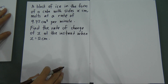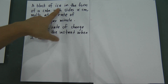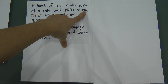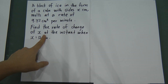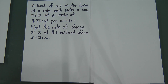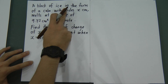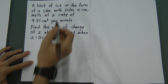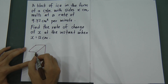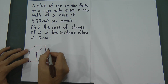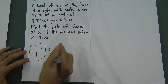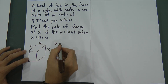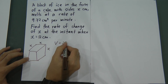Let's have a look at a past year question. The question says: a block of ice in the form of a cube with side X cm melts at the rate of 9.72 cm³ per minute. Find the rate of change of X when X equals 12. When you see 'cube' with side X, it means the height, length, and width are all X. So the volume of the ice cube equals X × X × X, which is X cubed.